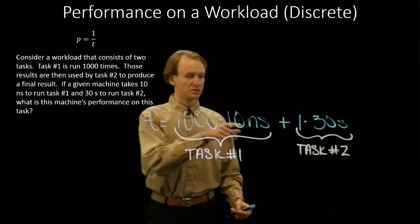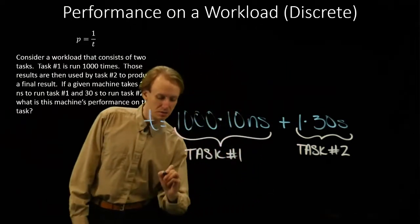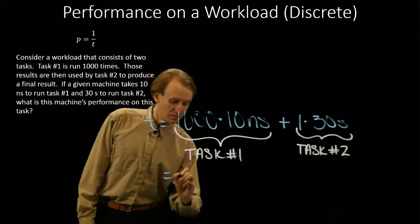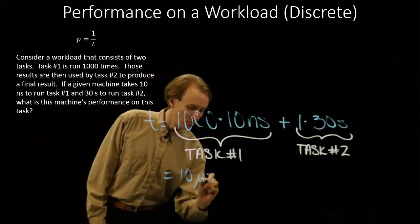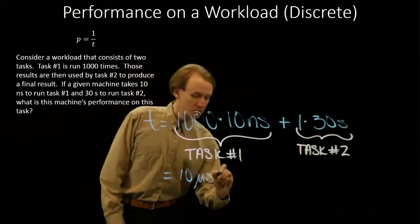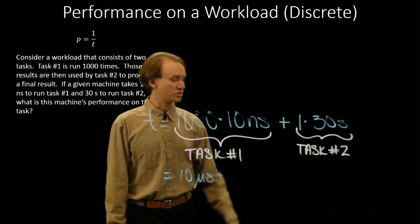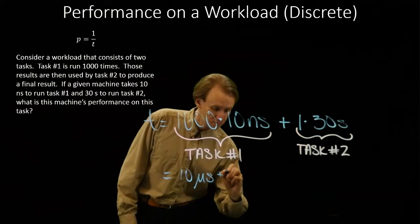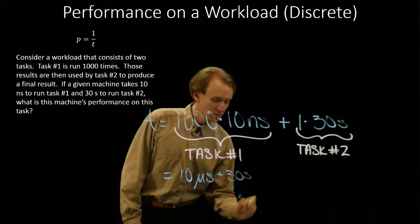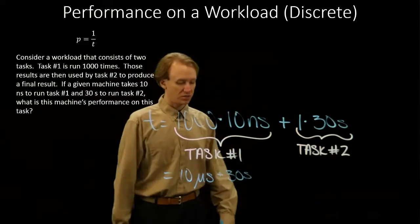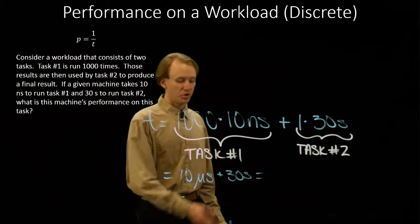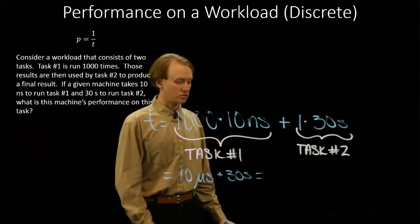1,000 times 10 nanoseconds gives me 10 microseconds. And 1 times 30 seconds is 30 seconds. These still aren't in the same units. I would want to put them both into, say, seconds or microseconds.